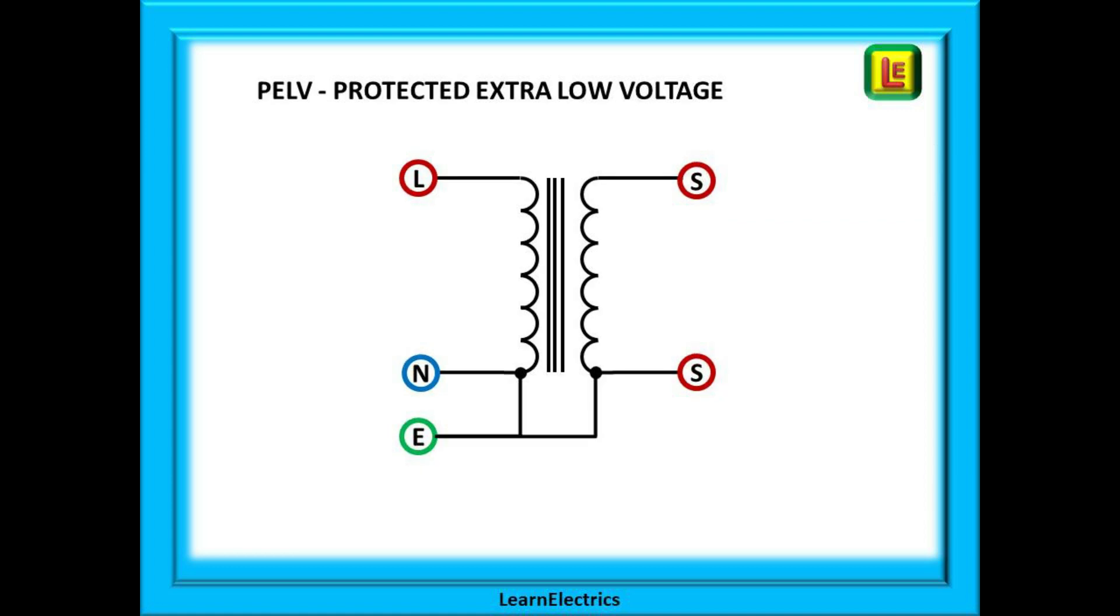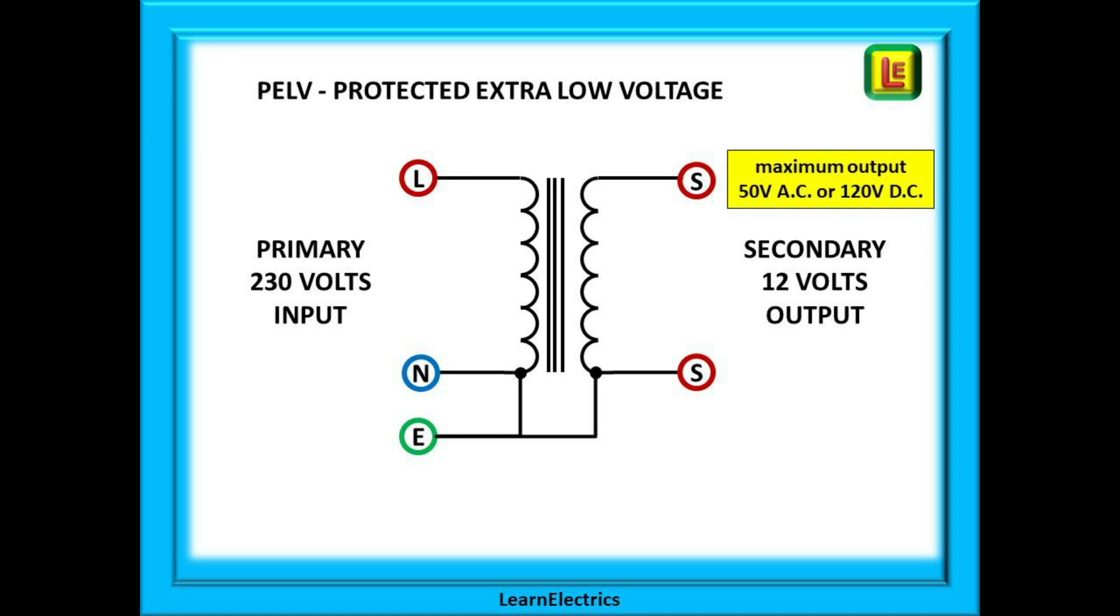Let's move on to PELV or PELV circuits. This stands for protected extra low voltage and the transformer schematic looks very similar to the SELV circuit. There is a primary input side and a secondary output side. The same rules apply for extra low voltage on the output, a maximum of 50 volts AC or 120 volts DC.